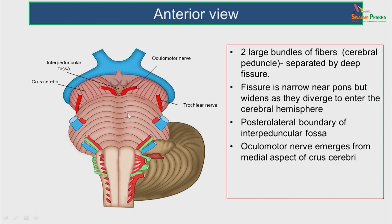In the anterior or ventral aspect, you can see two large bundles of fibers called the cerebral peduncles. They are separated by a deep fissure which is narrow near the pons and widens as it diverges entering the cerebral hemispheres. The crus cerebrae or cerebral peduncles form the posterolateral boundary of the interpeduncular fossa. On the medial aspect of the peduncles, the oculomotor nerve emerges, and on the lateral aspect the trochlear nerve emerges.